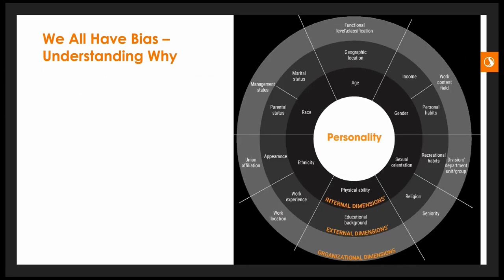Here's a graphic — the Four Layers of Diversity by Gardenswartz and Rowe — showing many different aspects like appearance, recreational habits, personal habits, marital status, parental status, and the type of home you're raised in. All of these different aspects of human characteristics we can be biased about, and this may influence our behavior in the workplace. This shows that bias is much more than simply gender, class, race, or religion — it's every aspect of human characteristics, and it's really important to understand that so we can counteract it.